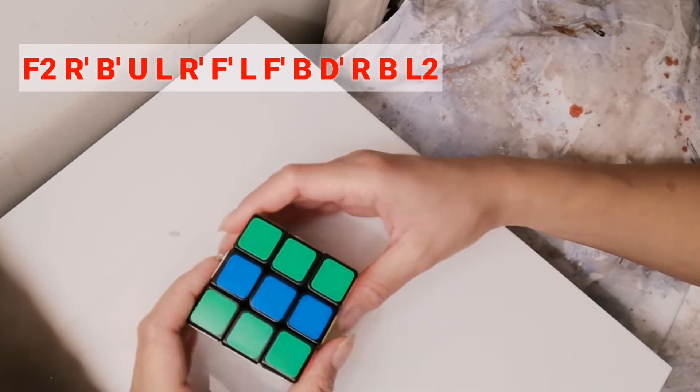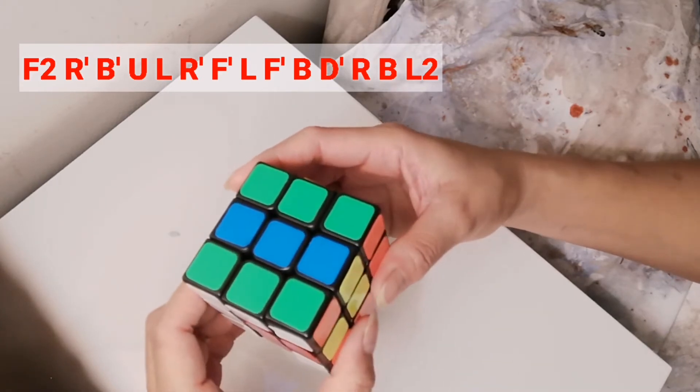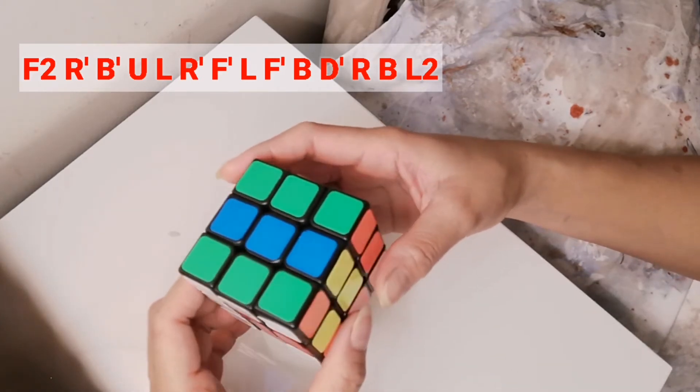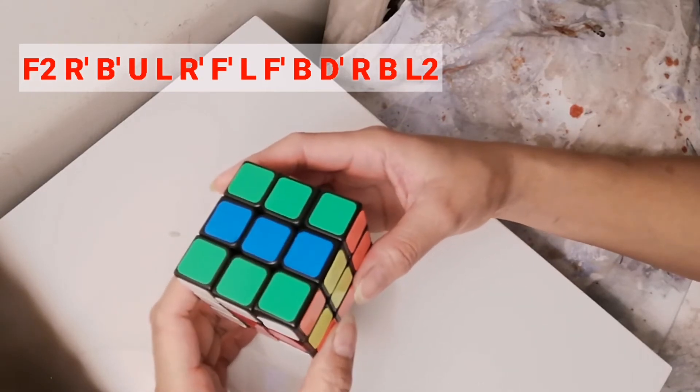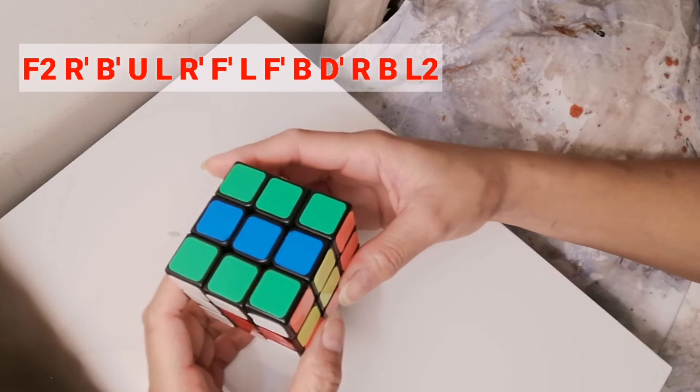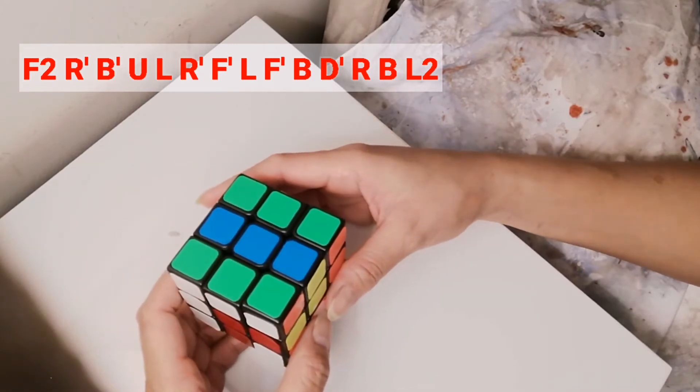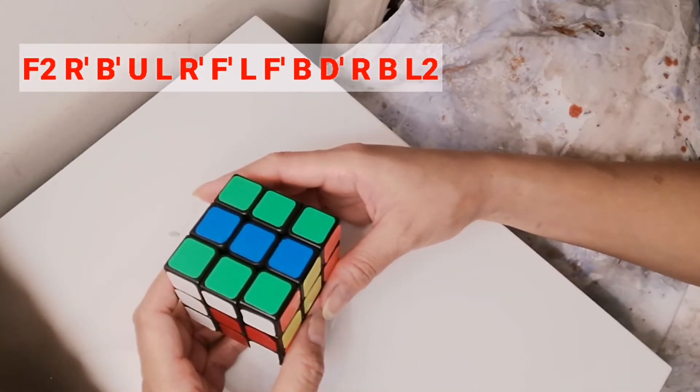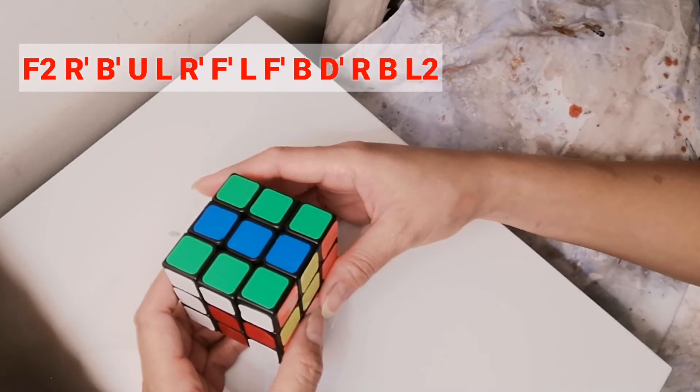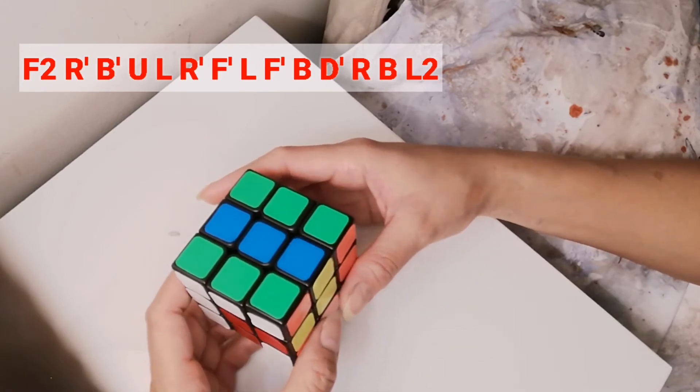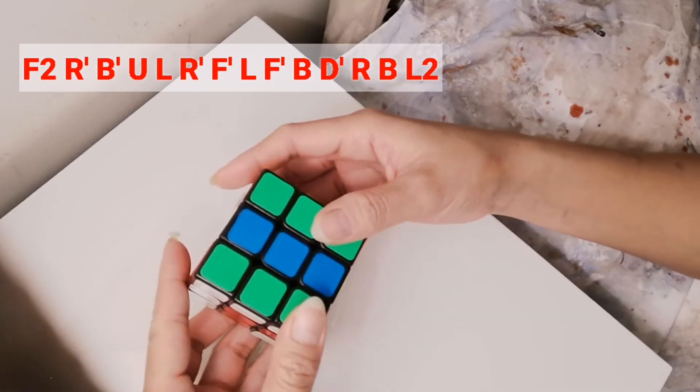So how to undo this pattern? As usual guys, we use the same pattern: F2 R' B' U L R' F' L F' B D' R B L2. So let's undo this pattern.